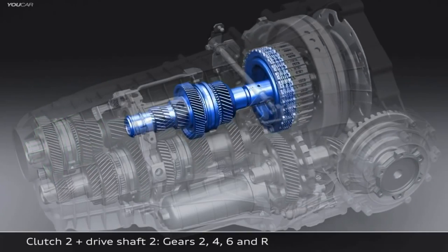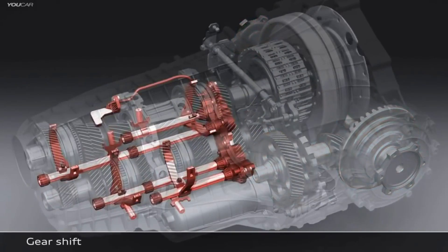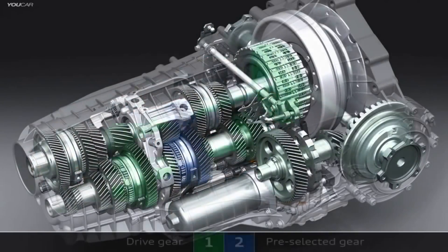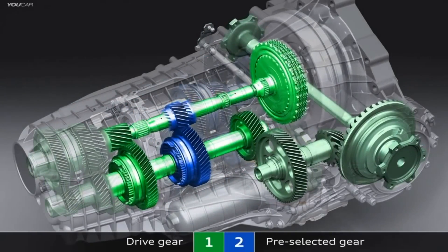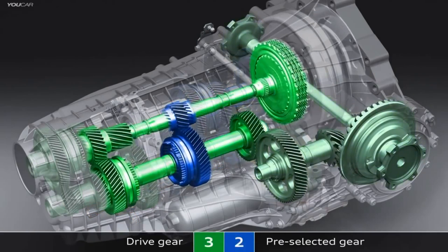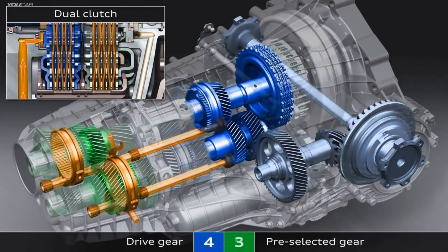In this transmission, when you are in a gear, say second gear, then the next gear is pre-selected and already engaged. So when you have to shift up, the clutch set connected to the second gear releases and the clutch set connected to the third gear engages.